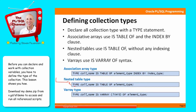Nested tables use TYPE and IS TABLE OF just like an associative array, but with no INDEXED BY clause. The only syntactic difference is the absence of an index. In practice, you can use an index with nested tables, but you can also work with them as sets using the multiset operators. Finally, the varray type also uses the TYPE keyword, then IS VARRAY, and you specify the maximum number of elements — that's the key difference between a varray and the other two collection types. You declare in advance that it can have at most 10, 20, or 100 elements. So three collection types with minor variations in syntax.